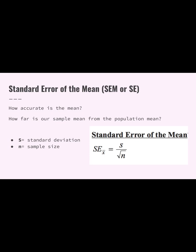Standard deviation is something we need in order to calculate the standard error of the mean — again, not something you're asked to calculate in AP Bio. What the standard error of the mean, or SEM, tells us is how accurate your mean or average is. When you collect data you're collecting a sample, and we're wondering how far your sample mean is from the true population mean. Our experiment is just a small sample of what it would be like in the full population, so SEM tells us how far our experimental data is from the true data.